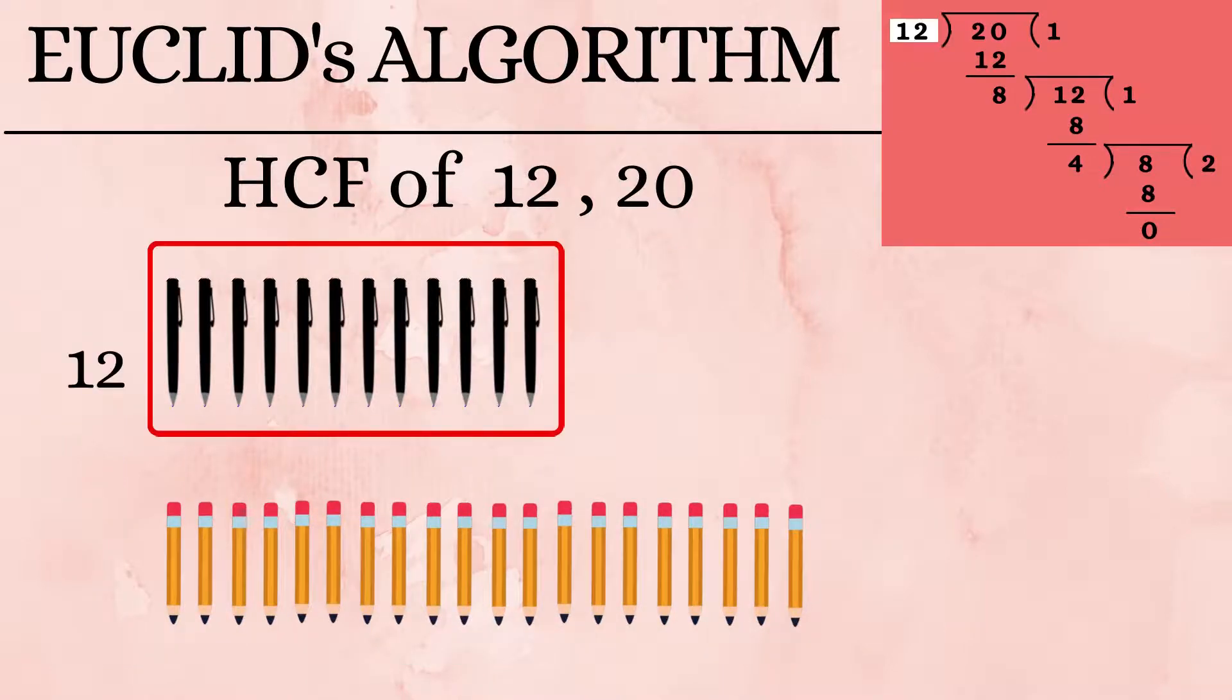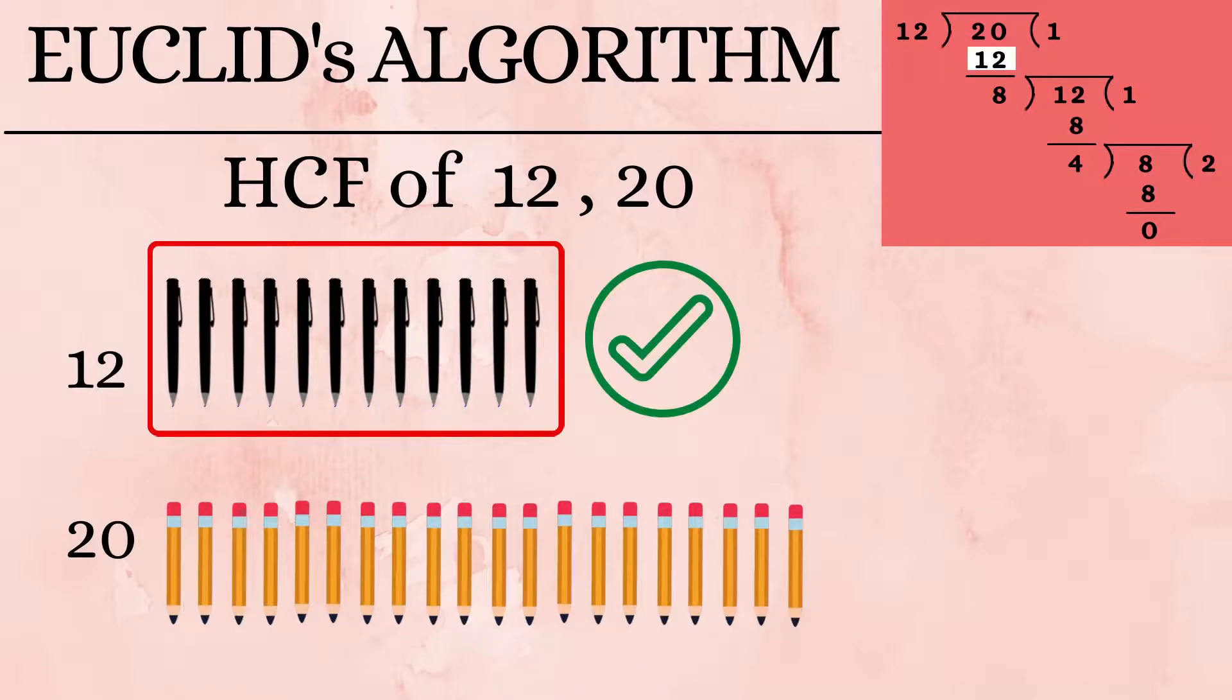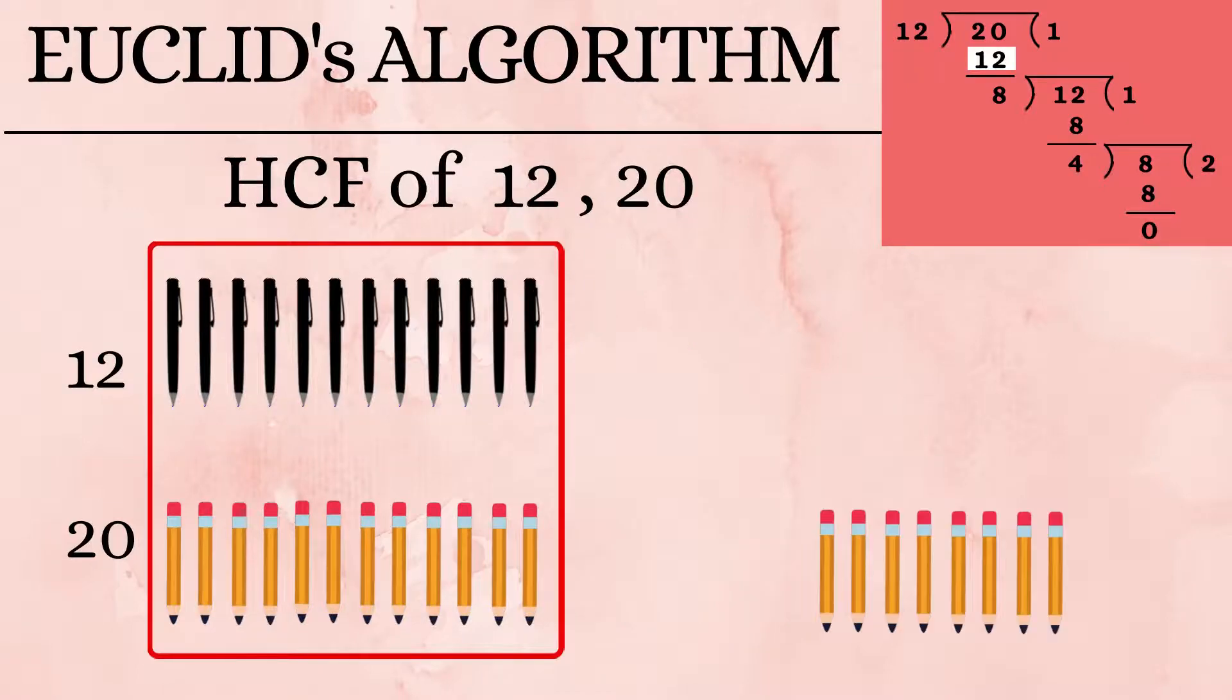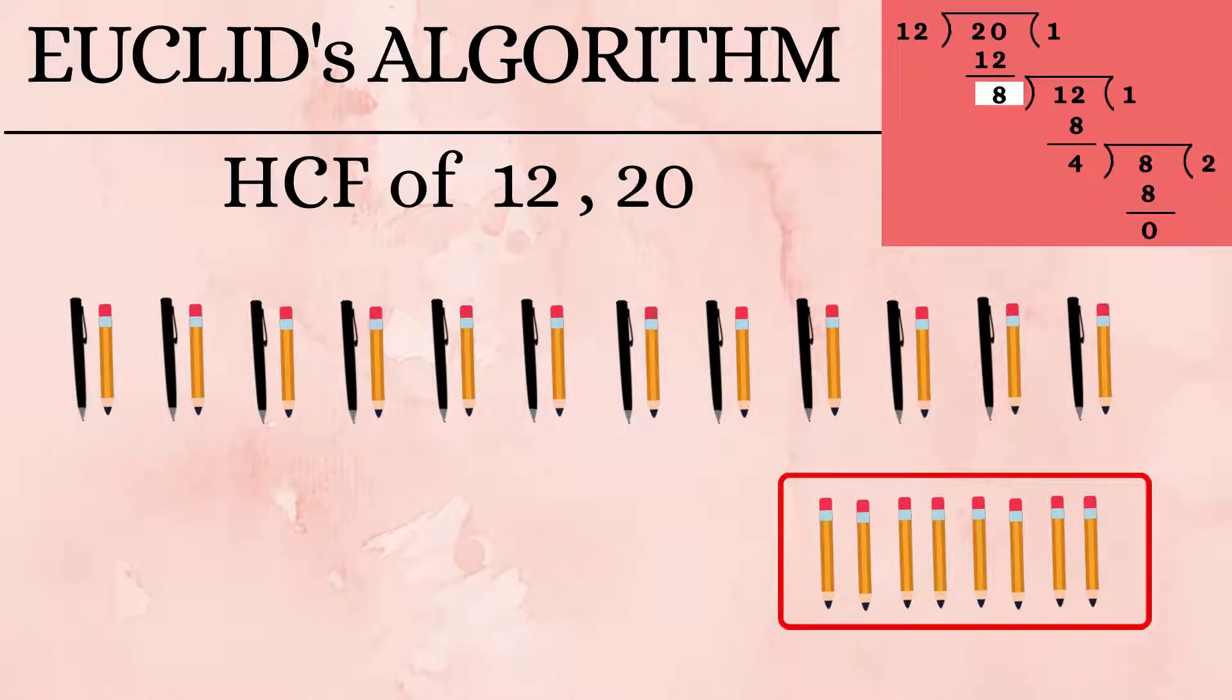One group has 12 pens and another has 20 pencils. She thinks of picking the smaller set, 12 pens. So why not give it to only 12 friends? That way they will all get an equal share. Now she finds out that there are 8 pencils remaining. But there shouldn't be any pens or pencils left. So she puts them back and checks.